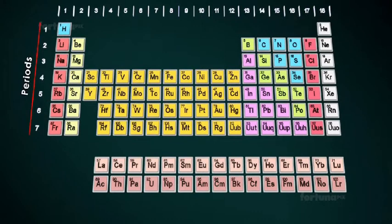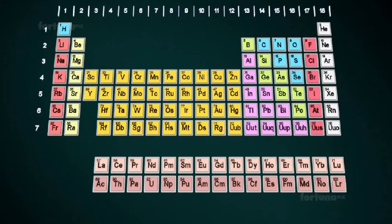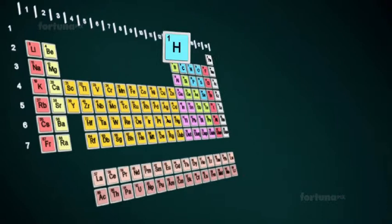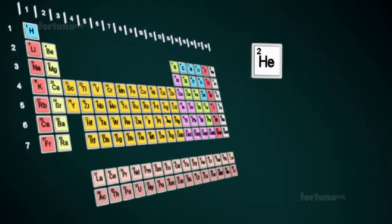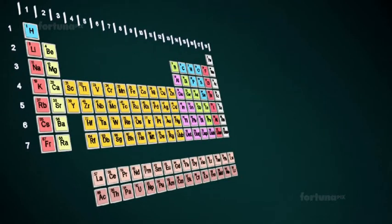The 18 vertical columns are the groups. The table also tells us the chemical symbol for each element: H for hydrogen, He for helium, C for carbon, and Au for aurum, more commonly known as gold.